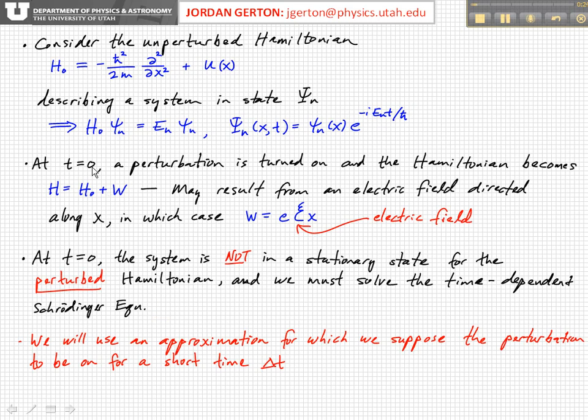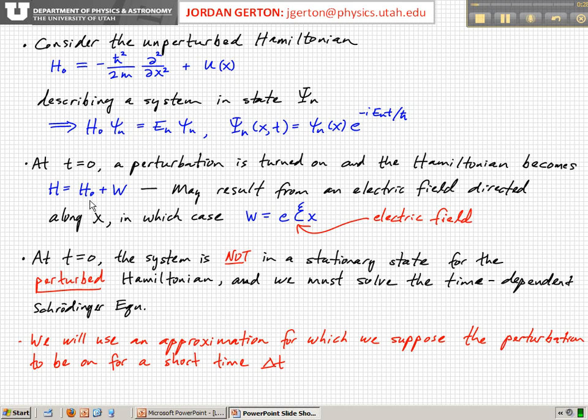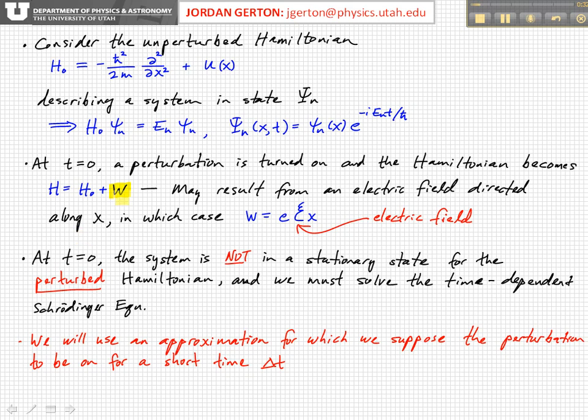Okay, so at time equals zero, we now turn on a perturbation, and the Hamiltonian now has a second term. That second term W represents the perturbation, and for example, as we've discussed, it can result from an electric field being applied. If that electric field happens to be applied along the x direction...